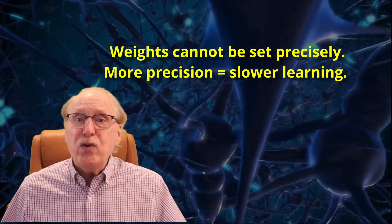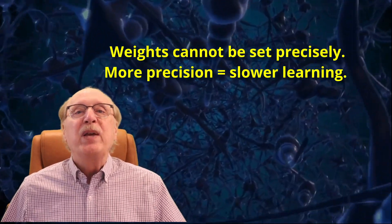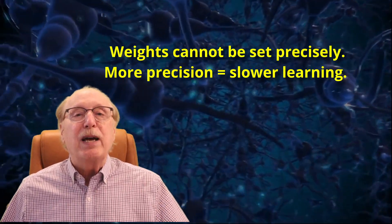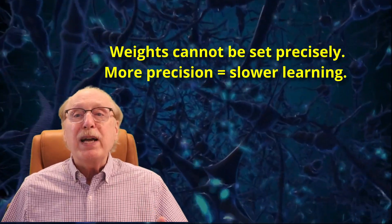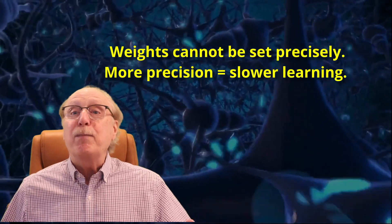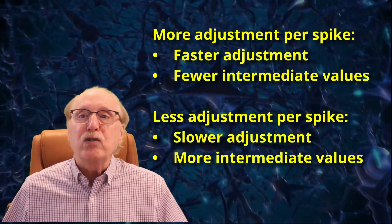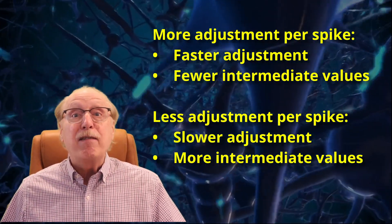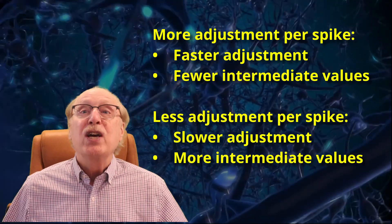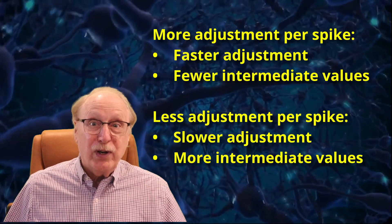Further, the more precision you want in synapse values, the slower the learning will be. If you need to strengthen a synapse from its minimum value to its maximum, you should expect it to take multiple spikes in the best of circumstances. This is fine, but creates a clear trade-off between the number of distinct weights a synapse can have and the time it takes to set that weight. So higher precision means slower learning.